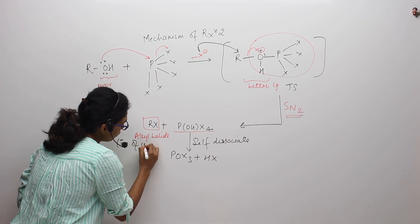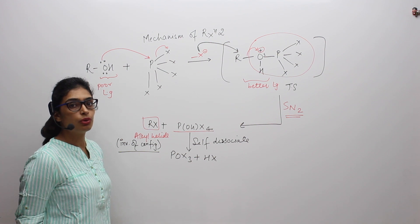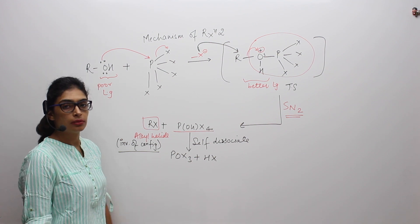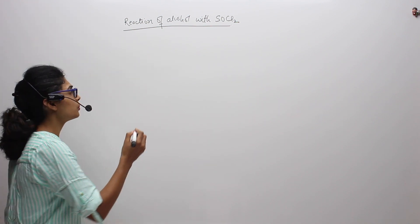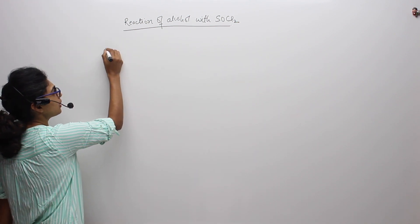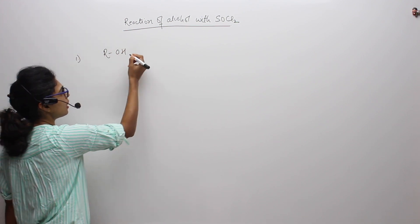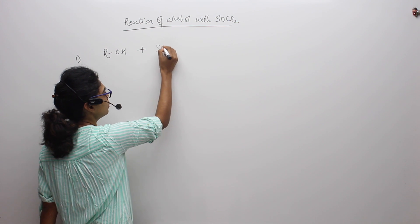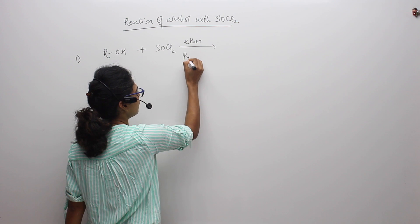Inversion of configuration will take place. Now note this down so that we can move to the next reaction. So next we will be doing reaction of alcohol with SOCl2. So we have two types of reactions what can happen.